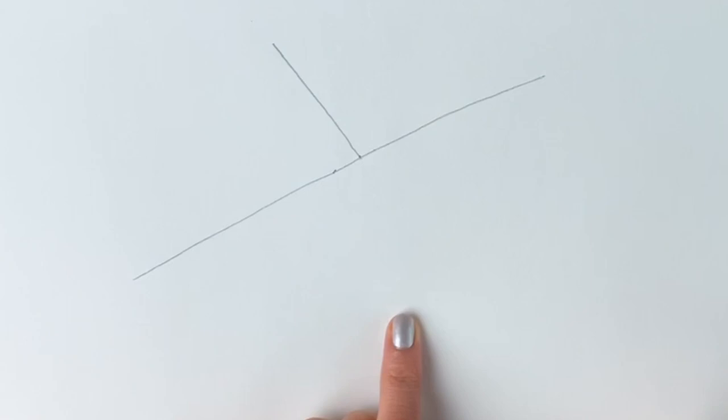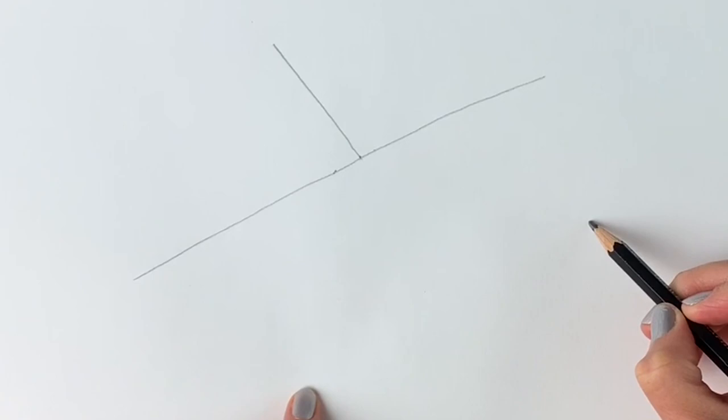Then we're going to be drawing two lines coming out diagonally like this. So the first one comes down like this.